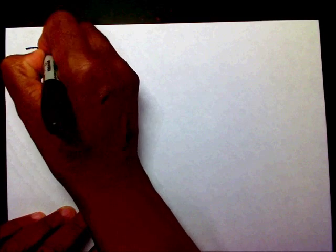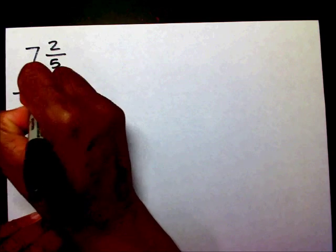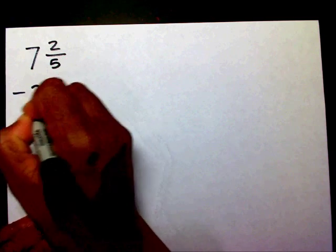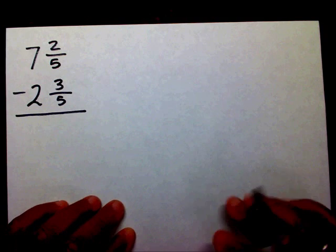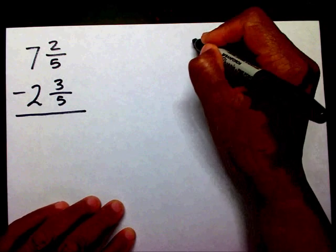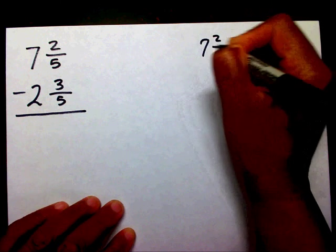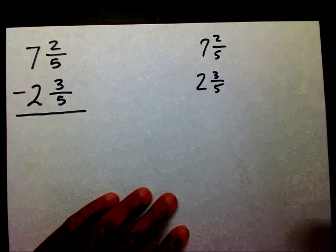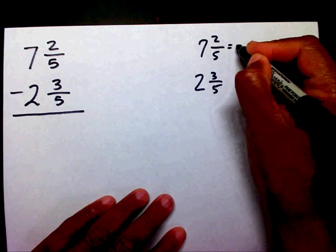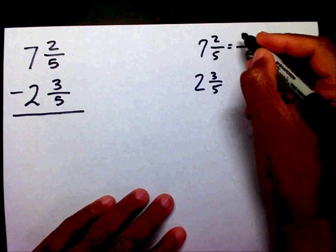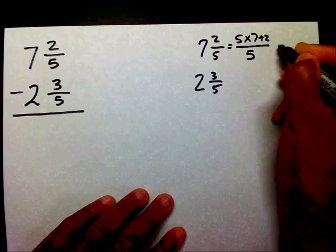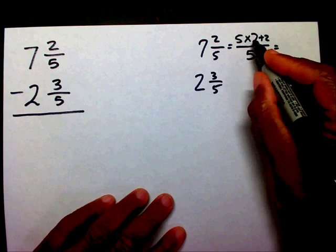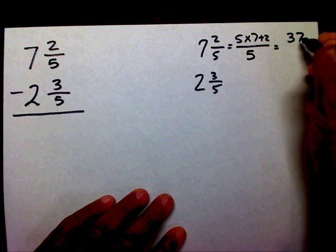Let's do another one: seven and two-fifths minus two and three-fifths. I want to change seven and two-fifths and two and three-fifths into improper fractions. My denominator is five. Five times seven plus two — five times seven is thirty-five, plus two is thirty-seven-fifths.